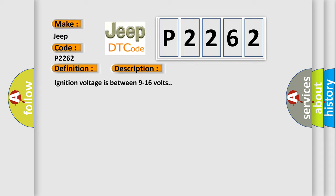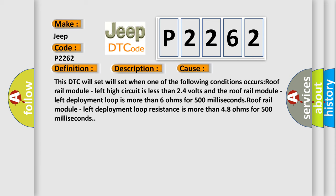This diagnostic error occurs most often in these cases. This DTC will set when one of the following conditions occurs: Roof rail module left high circuit is less than 2.4 volts and the roof rail module left deployment loop is more than 6 ohms for 500 milliseconds. Roof rail module left deployment loop resistance is more than 4.8 ohms for 500 milliseconds.